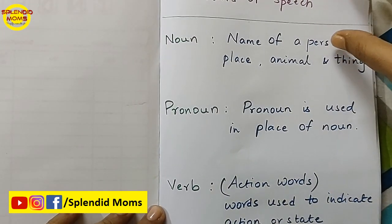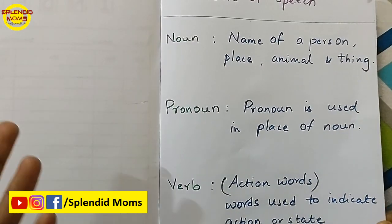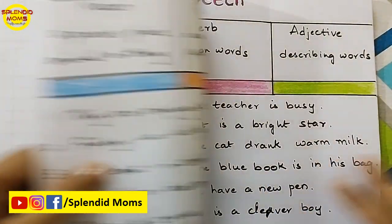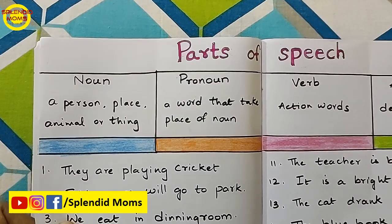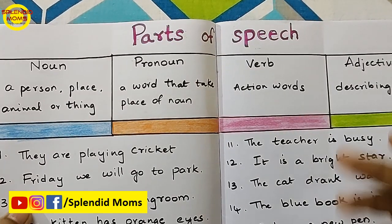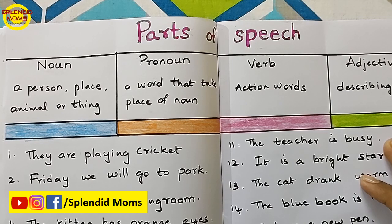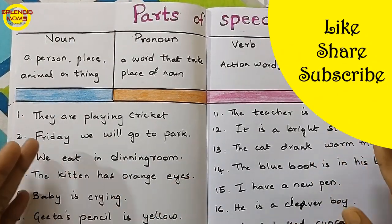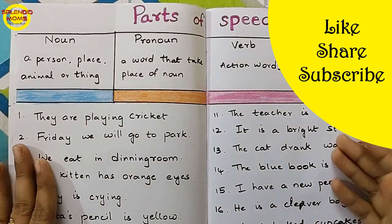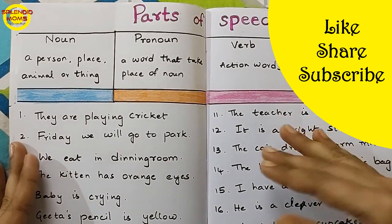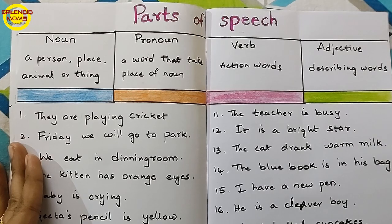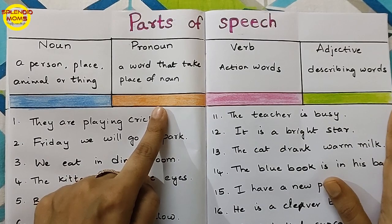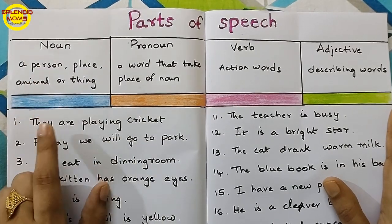Instead of making many different worksheets, you can practice all these things in a different way. Here is a worksheet that will help you revise all these things at once. This is a color-coding worksheet. For class 1, children have learned only these four things. If your child is in class 2 or 3, you can also add adverbs.